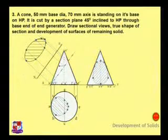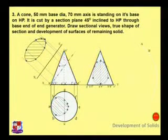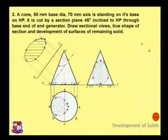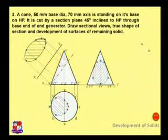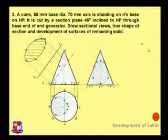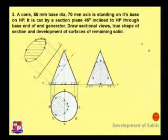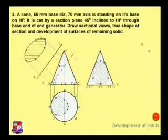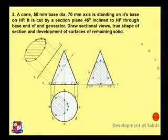Name this curve. Now, how to draw the development of this cone. Since the cone is cut, to draw its development first find angle theta. Angle theta is equal to 360 degrees multiplied by the radius of the cone, divided by the true length of the slant edge o-dash a-dash. Find angle theta and draw that angle.